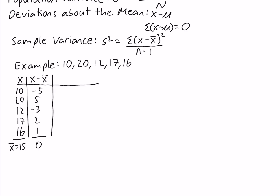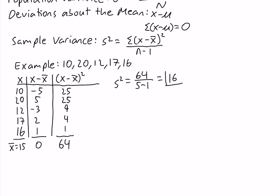In our last column, we compute the squared deviations about the mean — the square of the previous column. Negative 5 squared is 25, 5 squared is 25, negative 3 squared is 9, 2 squared is 4, and 1 squared is 1. We sum this column and get 64. So our sample variance is equal to 64 divided by 5 minus 1, which is 4. 64 divided by 4 is equal to 16, so our sample variance is equal to 16.